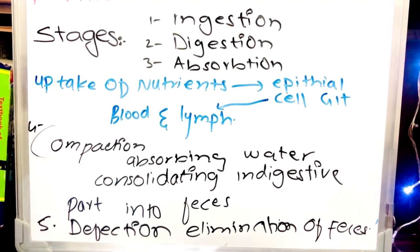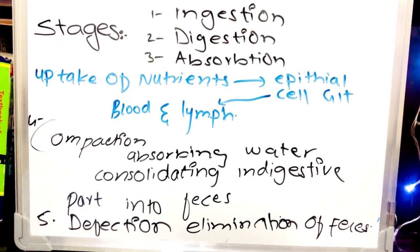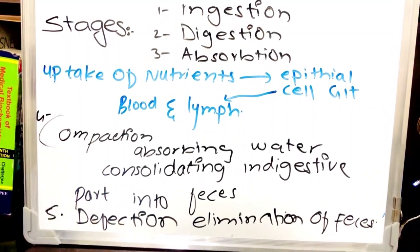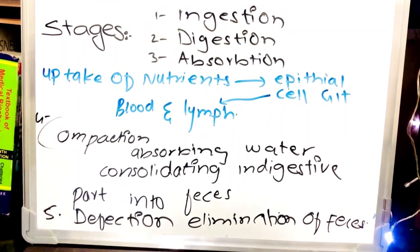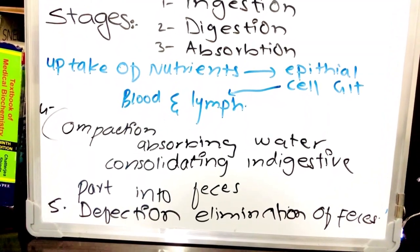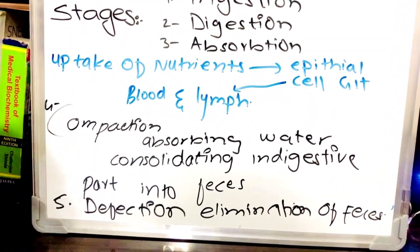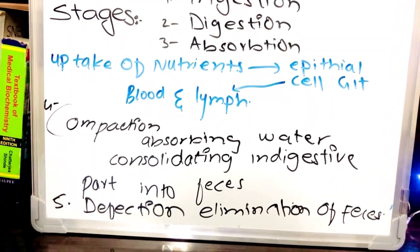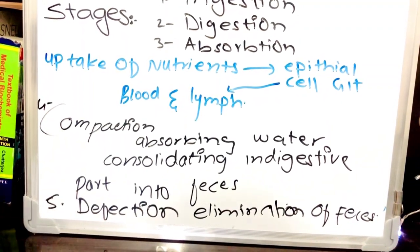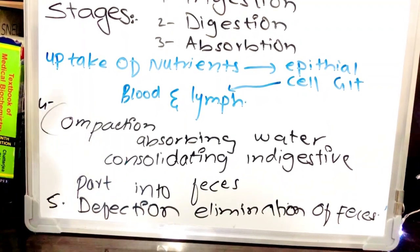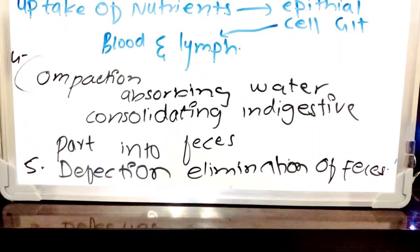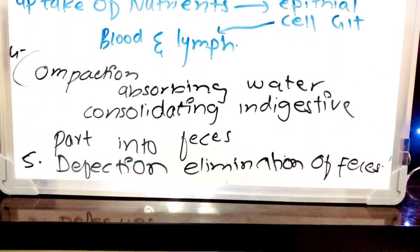Now we will discuss the stages of the GIT. First, ingestion, which is the intake of food. Then digestion. After digestion comes absorption — basically absorption is the uptake of nutrients into the epithelial cells of the GIT, which are then sent into the blood and lymph.